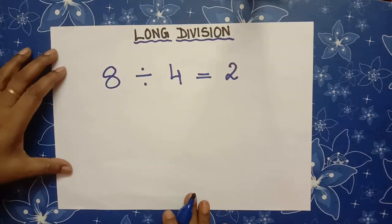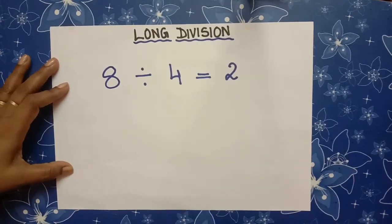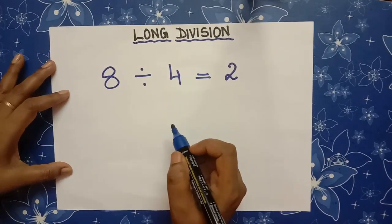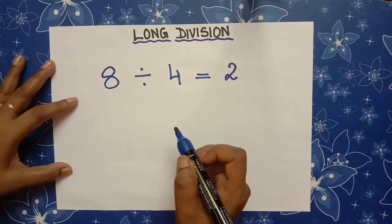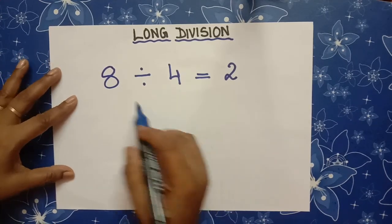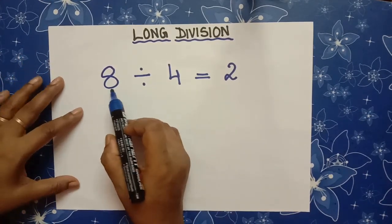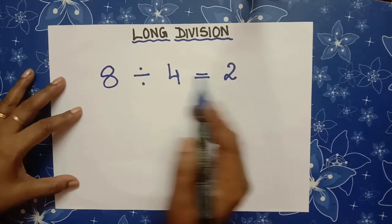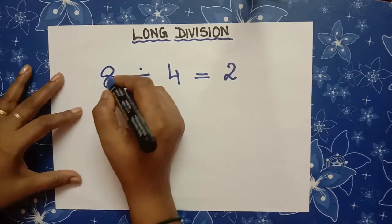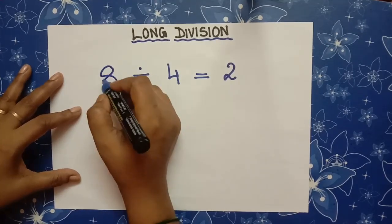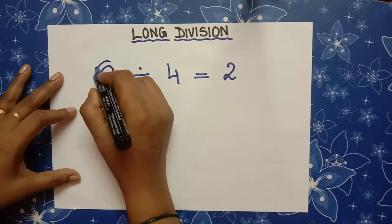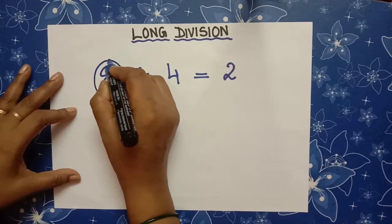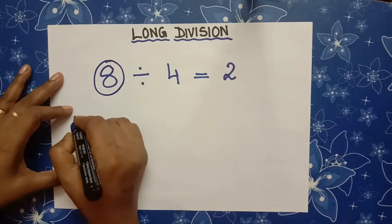After simple division, let's see long division. Let us learn the terms used in division. For example, 8 divided by 4 is equal to 2. The number being divided that is 8 is called the dividend.